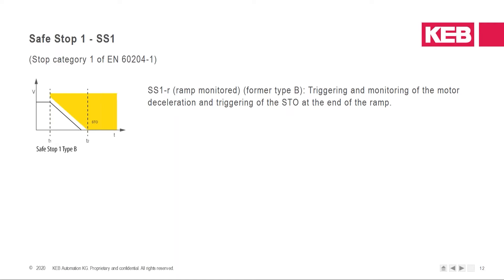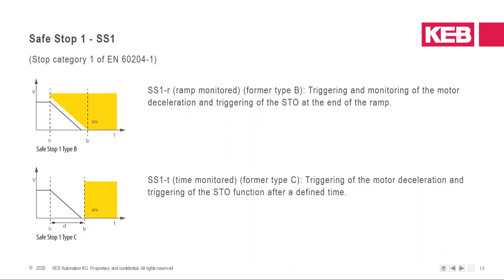Safe stop 1, SS1, has two versions. The first is SS1 ramp monitored: triggering and monitoring of the motor deceleration and triggering of STO at the end of the ramp. The second possibility is SS1 time monitored: triggering of the motor deceleration and triggering of the STO function after a defined time. In this case, the deceleration itself is not observed.